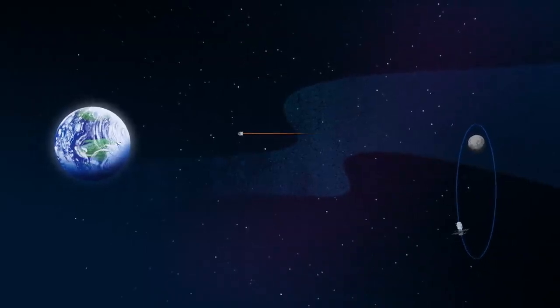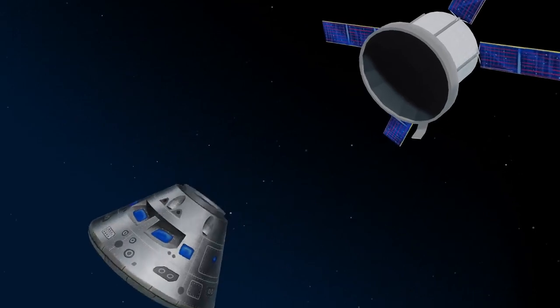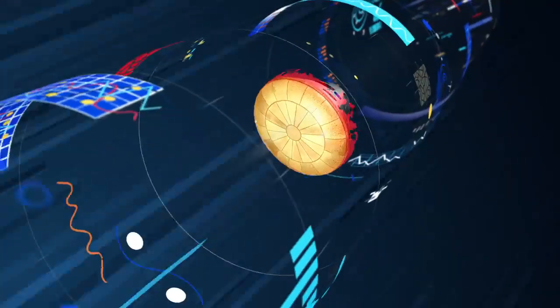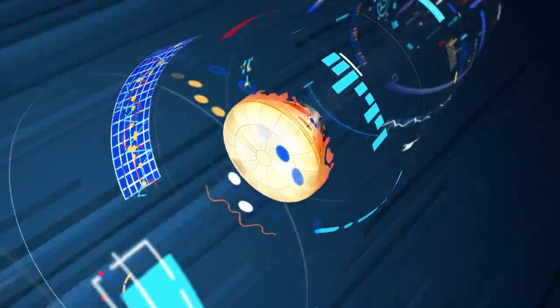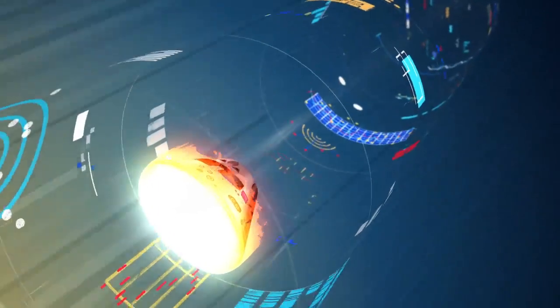As they near the end of this journey, the service module is released, and the crew module is oriented heat shield first. Entering Earth's atmosphere at 25,000 miles per hour, the friction of air slows Orion considerably, while also subjecting it to temperatures of 5,000 degrees.